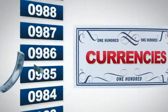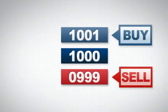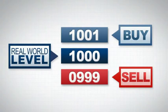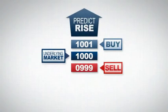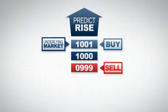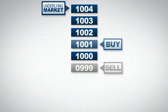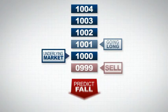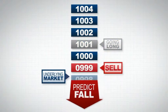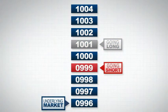With each market, you're presented with a buy and a sell price, either side of its real-world level, also known as the underlying market. If you think the market will move up, you open your bet at the buy price, also known as going long. If you think it will move down, you open at the sell price, called going short.